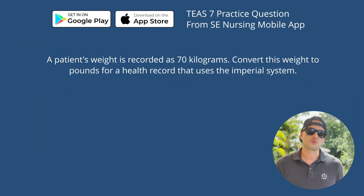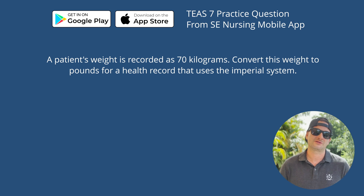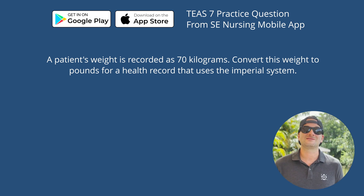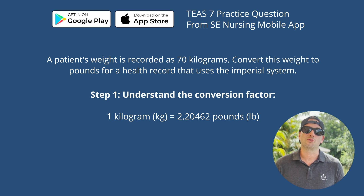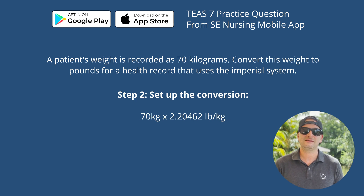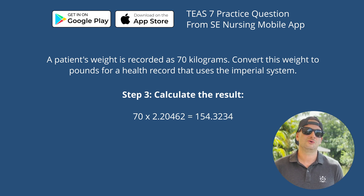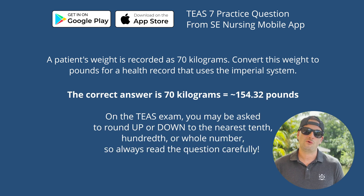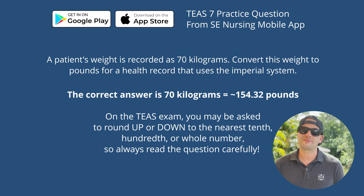Here's a practice word problem: a patient's weight is recorded as 70 kilograms — convert his weight to pounds for a health record that uses the imperial system. You need to know the conversion factor: one kilogram equals approximately 2.2 pounds. Set up the conversion: 70 kilograms × 2.2 = 154.32 pounds. So the answer is 70 kilograms equals 154.32 pounds. Converting weight between kilograms and pounds is essential in international healthcare settings where different units are used.